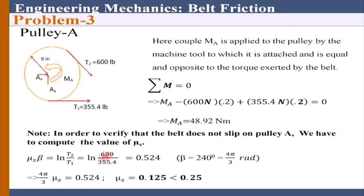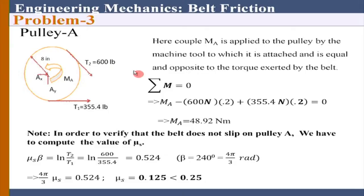Remember, M_A is something given by the machine tool that is connected to the drum. This part is simply a verification that impending slip is not happening at A. Another way is that T2 by T1 must be less than e to the power mu_s times beta of this pulley.